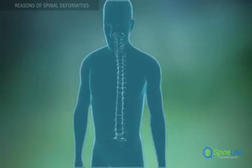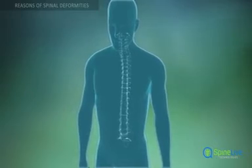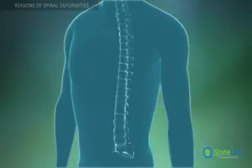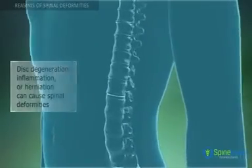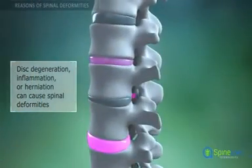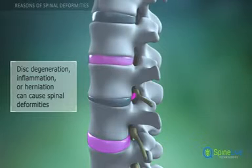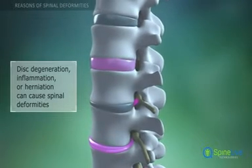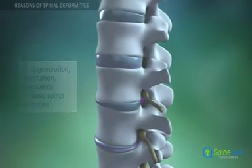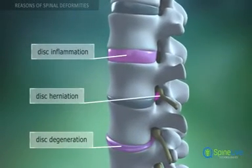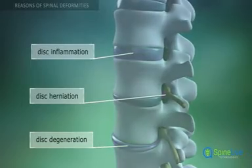Another cause of spinal deformities is the pathological changes of the intervertebral discs that lie between the vertebrae. These can occur due to disc degeneration, inflammation, spondylodiscitis, or a hernia in one or several discs.